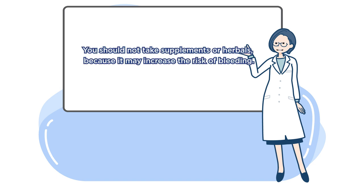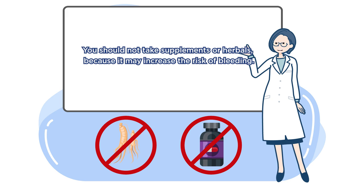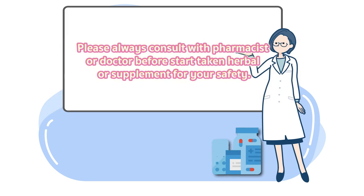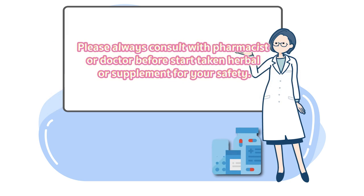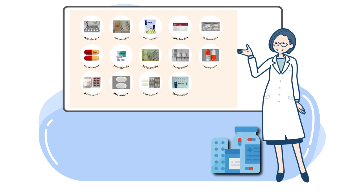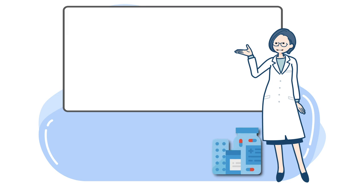Smoking and drinking alcohol can increase the risk of bleeding. You should not take supplements or herbal products without consulting a pharmacist or doctor first, because supplements and herbal products may increase the risk of bleeding or interact with the medicine. The pharmacist or doctor will check the interaction for you and confirm whether it can be taken or not.